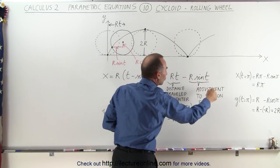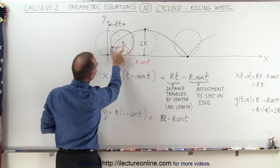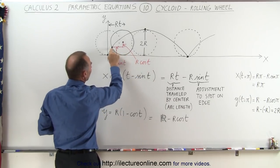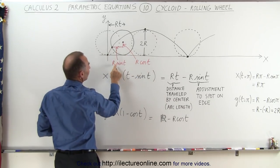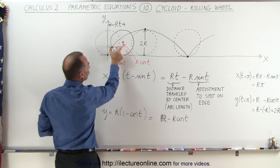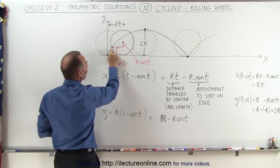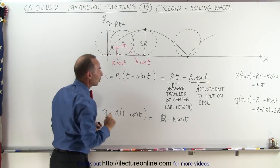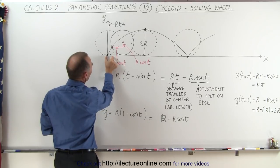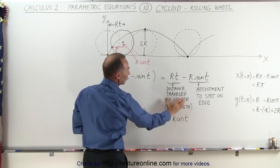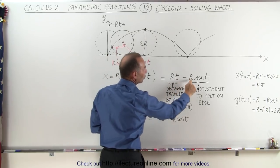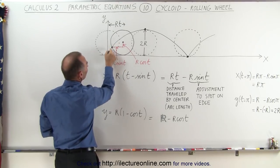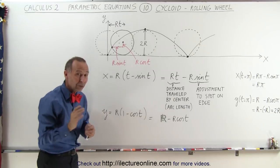The x position is defined by the distance traveled by the center minus r times the sine of t — this is the adjustment to the spot on the edge. For example, the distance from where the center is on the x-axis reference to where the spot on the wheel is equals r sine theta. This has to be subtracted from the center's distance to represent the x coordinate of the point on the wheel that started at the origin. So this distance from the origin equals rt minus r sine theta.